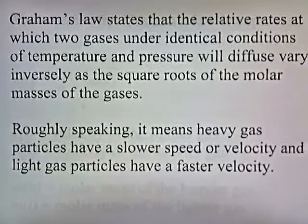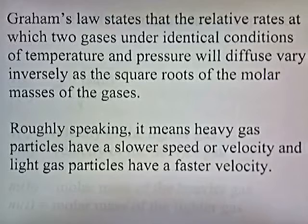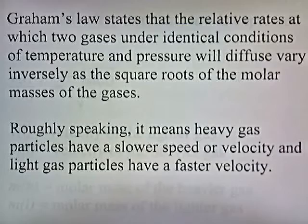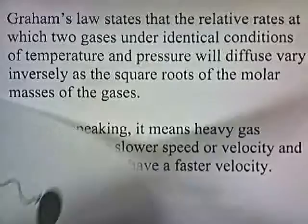Graham's law states that the relative rates at which two gases under identical conditions of temperature and pressure will diffuse vary inversely as the square roots of the molar masses of the gases. Now, what does that mean? Well, roughly speaking, it means heavy gas particles have a slower speed or velocity and light gas particles have a faster velocity. So this big ugly sentence here is just a rehash of this idea here, that a gas particle that's heavy moves slower than a gas particle that is light.